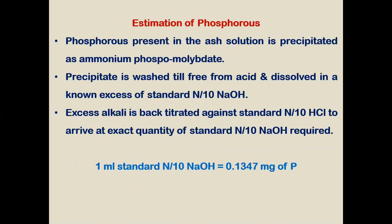For estimation of phosphorus, the phosphorus present in the solution is precipitated directly as ammonium phosphomolybdate. The precipitate is dissolved in a known excess of standard N/10 NaOH, and the excess alkaline is back-titrated against standard N/10 HCl to arrive at the exact quantity of N/10 NaOH required. One ml of N/10 NaOH is equivalent to 2.1347 mg of phosphorus.